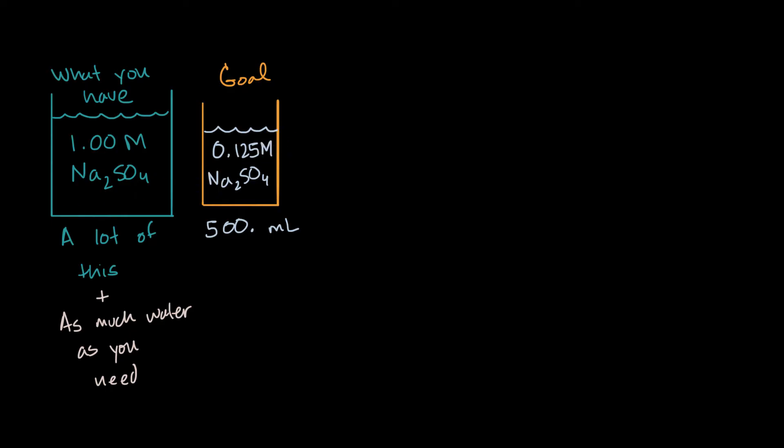So first, let's just go over the intuition. You have a higher concentration here. You have a lower concentration here. So our intuition would tell us that we're going to take less than 500 milliliters of our original solution, pour some of that in. That's going to have a sufficient number of moles of sodium sulfate that if we were to then fill this up to 500 milliliters, that we would then have a 0.125 molar solution.